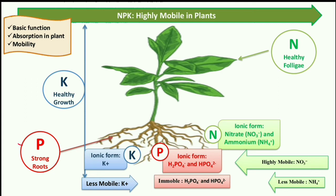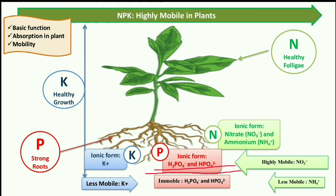Next we discuss phosphorus. The basic function of phosphorus is that it helps develop strong roots. For example, legume crops have deep roots because phosphorus is present in higher amounts, which helps make roots strong. Phosphorus also helps in nodule formation. Phosphorus is generally available in the soil in two ionic forms: H2PO4 negative and HPO4 negative.